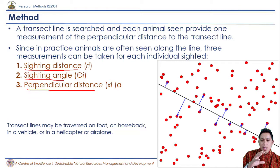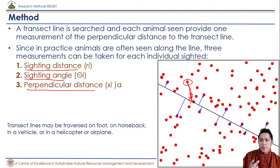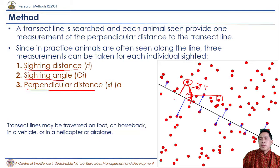If we want to study the density of individuals using the transect method, we must note down three important pieces of information. First is the sighting distance, r_i. Second is the sighting angle, theta. Third is the perpendicular distance from the transect, given by x_i. When we observe an animal from the transect line, we must collect all three of these values.